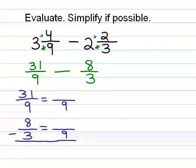So, 3 times 3 got me to 9. 8 times 3 is 24. This one stays 31 ninths. Now I can subtract 31 and then subtract 24 and have my answer.